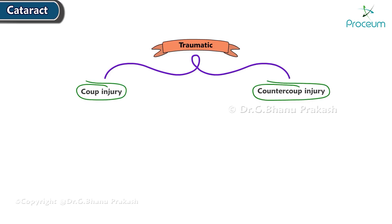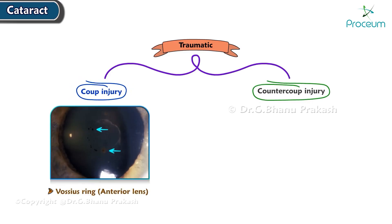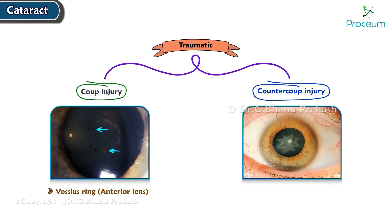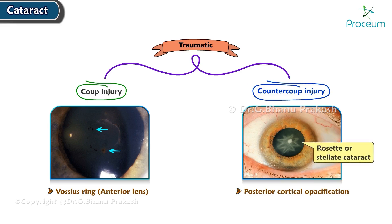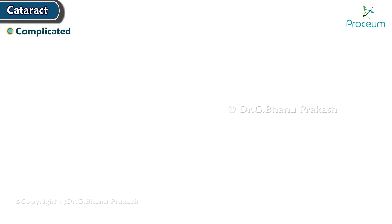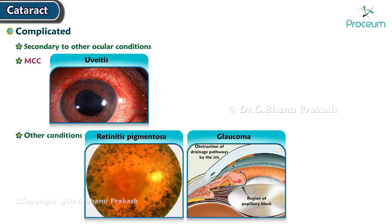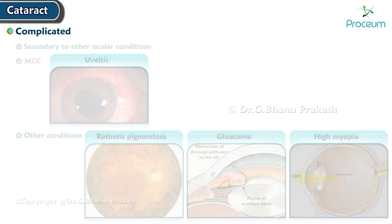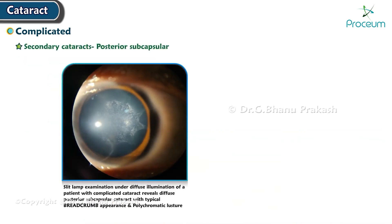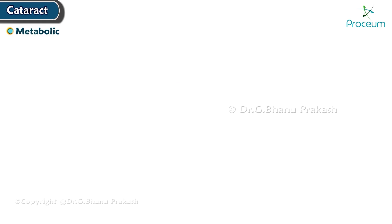Traumatic cataract is caused by coup and contrecoup injury. In coup injury, a Vossius ring is formed on the anterior lens, and in contrecoup injury, posterior cortical opacification forms, giving a rosette or stellate cataract. Complicated cataract occurs secondary to other ocular conditions and is most commonly caused by uveitis. Other associated conditions include retinitis pigmentosa, glaucoma, and high myopia. Secondary cataracts are mostly posterior subcapsular, showing a breadcrumb appearance.